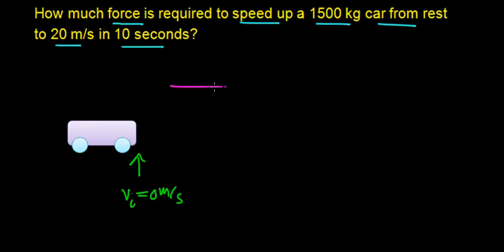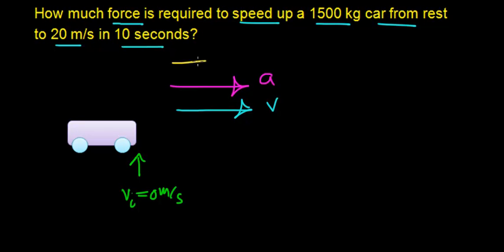This car is going to accelerate in this direction, and its velocity is also going to increase in this direction. Newton's second law says that in order for an object to accelerate in a certain direction, a force has to act in the direction that the object is going to accelerate. Notice that the force and acceleration vectors point in the same direction, indicating that the object is accelerating in the direction of the net external force.